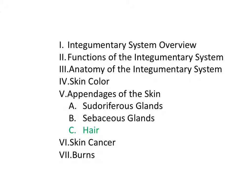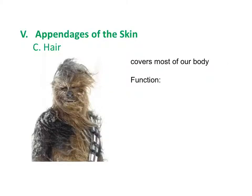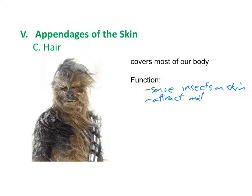The last skin appendage we'll discuss is hair, which covers most of the body. Functionally, hair senses insects before they can bite us, and is thought to have evolved to help attract mates — particularly the hair on top of the head and in eyebrows. Hair also plays a role in insulation, although in humans we've mostly evolved away from that function.